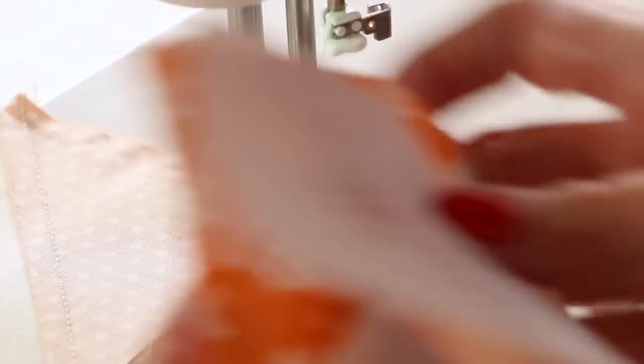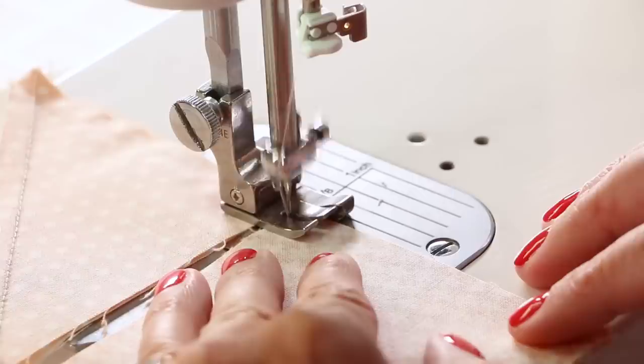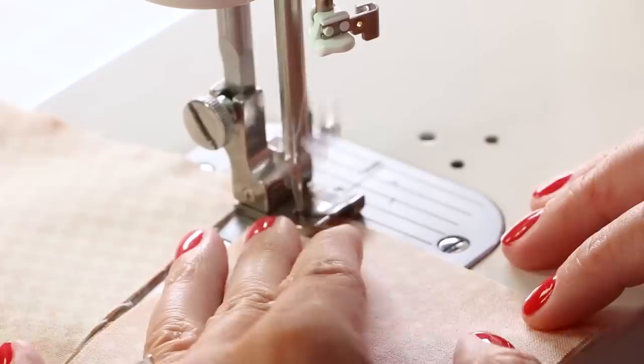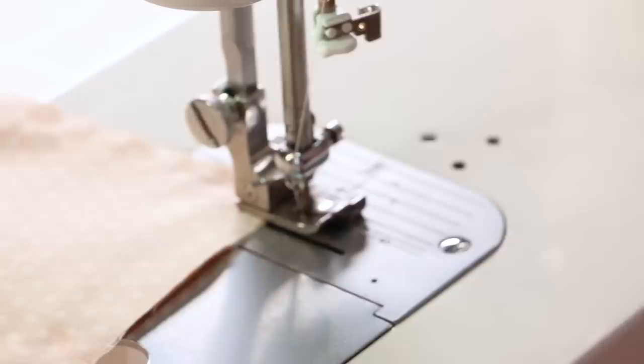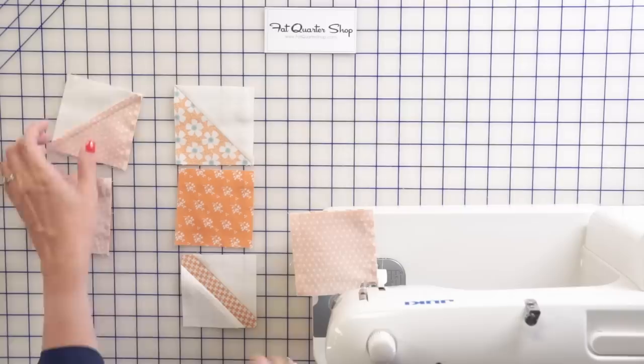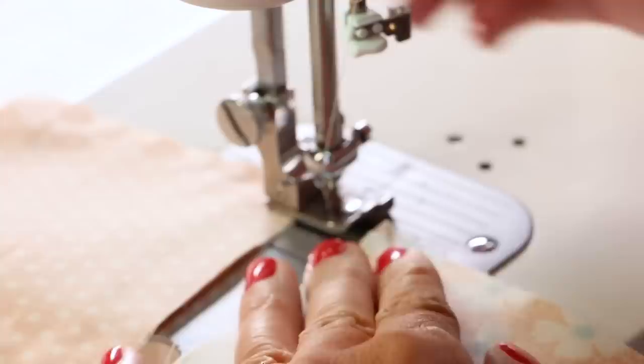So I'm using a 2.0 stitch length. And I'm just going to keep going down that first column. So now I'm going to cut off the first two and place them back on the table. And just keep sewing. I'm just going to keep sewing the next row. And this saves time and it saves thread.